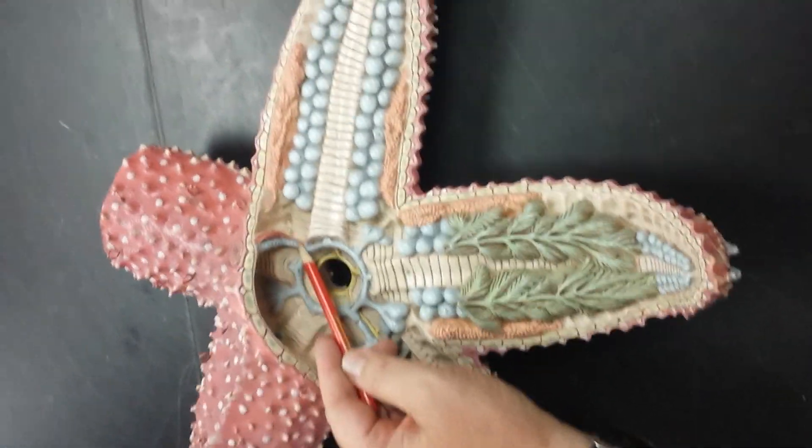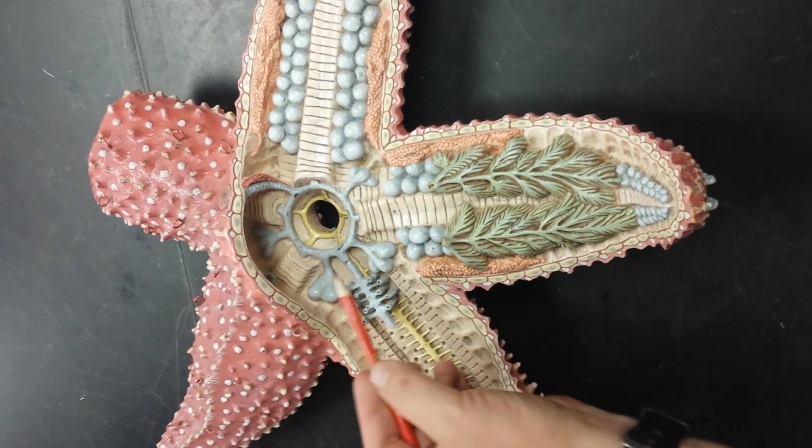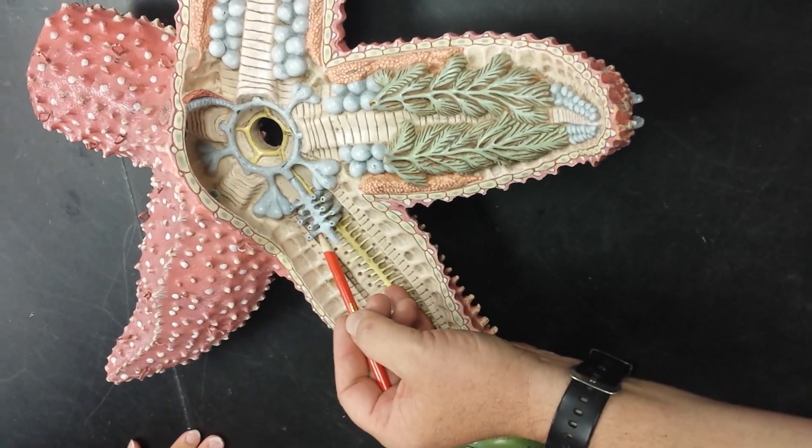We'll go to the inside, showing the stone canal, the ring canal, radial canal, and lateral canals.